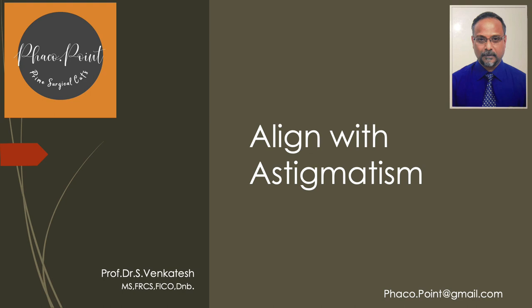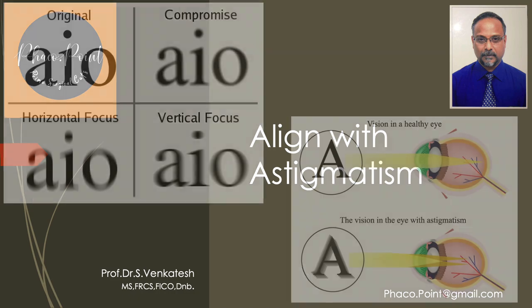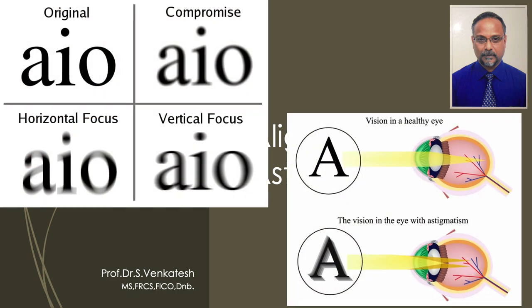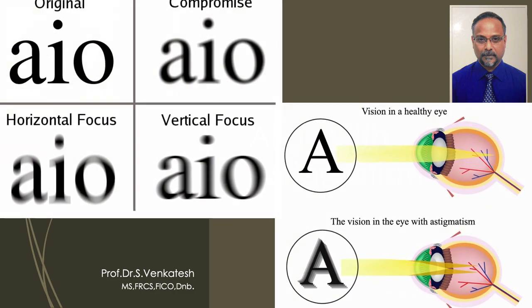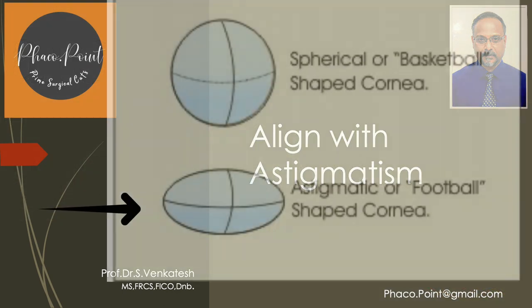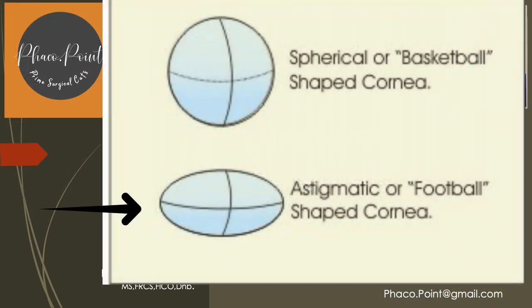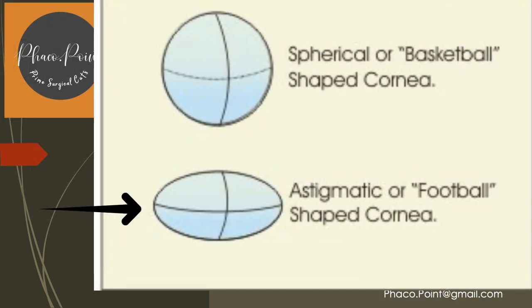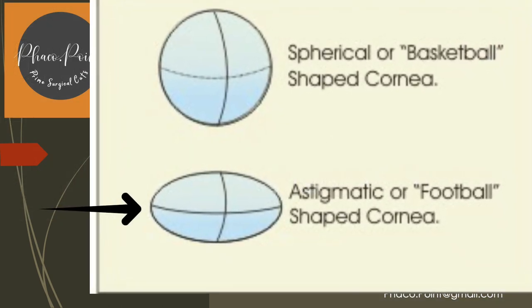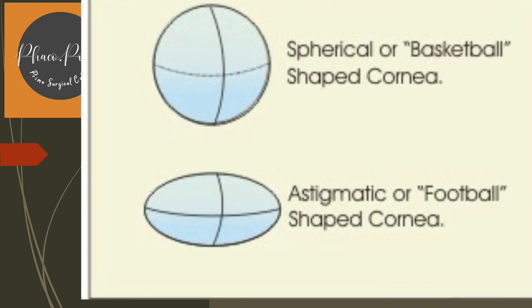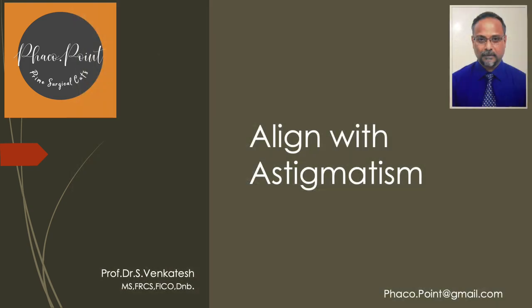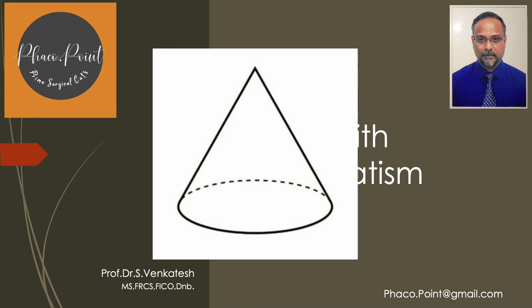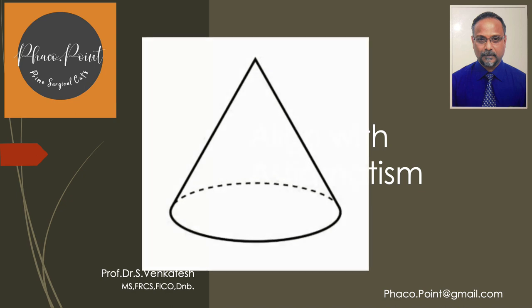Astigmatism results in a refractive state where there is no distortion-free vision at any distance. It results from a toric surface which refracts incident parallel light into a conoid, unlike a spherical surface that refracts incident light into either a converging or diverging cone of light.